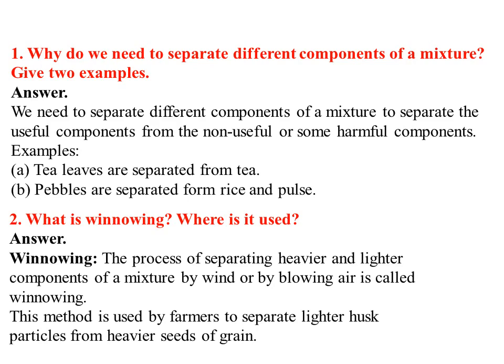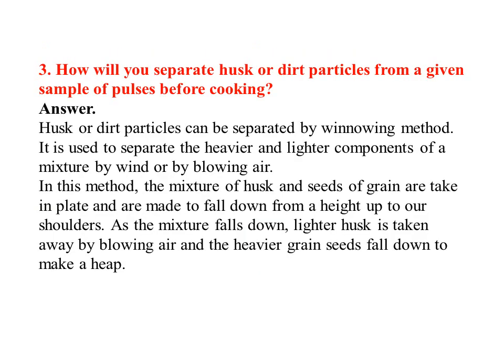Next question: What is winnowing and when is it used? Winnowing is the process of separating heavier and lighter components of a mixture by wind or by blowing air. This method is used by farmers to separate lighter husk particles from the heavier seeds of grains.